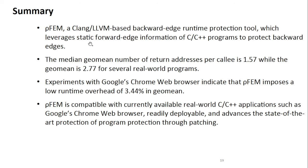In summary, our tool is a backward edge protection tool which leverages a state-of-the-art approach to mitigate ROP attacks for C and C++ programs. It achieves very low geo-mean numbers of return call sites per callee — 1.557 and 2.77. With the Chrome browser, we have a runtime overhead of around 3%. Our tool is compatible with real-world C++ applications, readily deployable, and advances the state-of-the-art of program protection through patching.